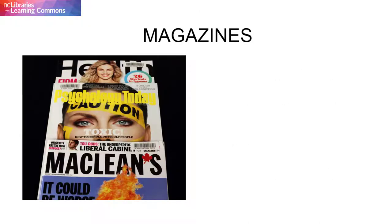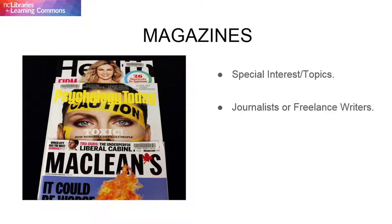Magazines, on the other hand, are usually published for a specific readership or for a readership with specific interests. Magazines contain articles written by journalists or freelance writers and authors, which somehow relate to the overarching theme of the magazine or magazine issue. Magazine articles are also reviewed by an editor.